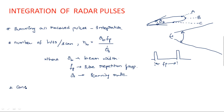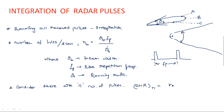Consider there are n number of pulses received. When we transmit a single pulse, n number of pulses are reflected back towards the radar system. When we integrate all these pulses, the resultant signal-to-noise ratio for n number of pulses is equal to n times the signal-to-noise ratio of each individual pulse.